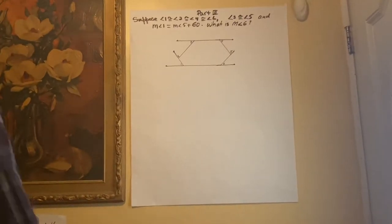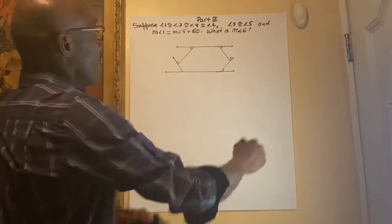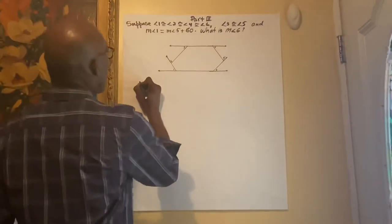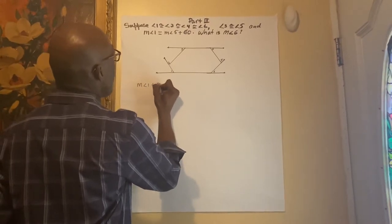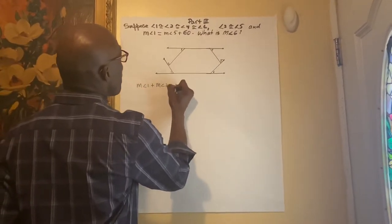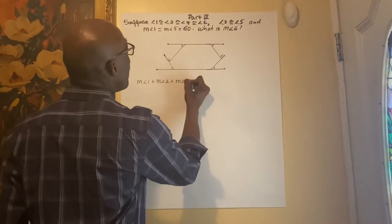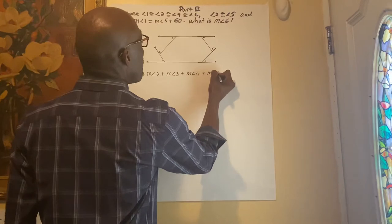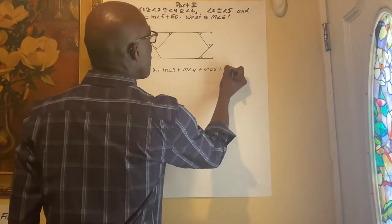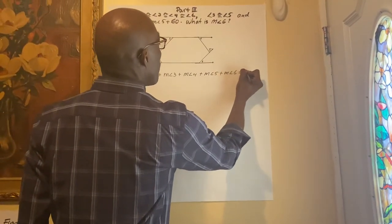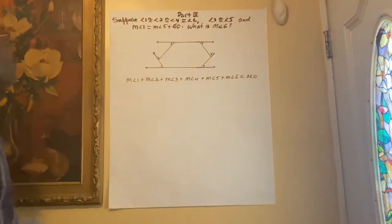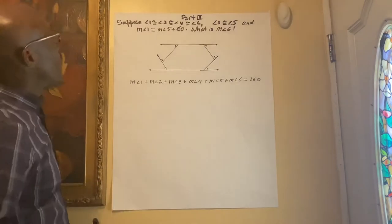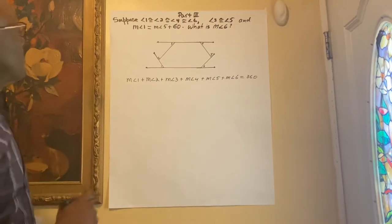Now we're going to add all the angles and make them equal 360. Measure angle 1 plus measure angle 2 plus measure angle 3 plus measure angle 4 plus measure angle 5 plus measure angle 6 equals 360. But angle 1 equals angle 2, equals angle 4, equals angle 6.